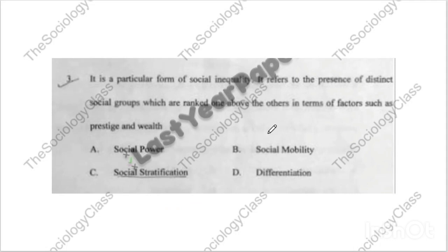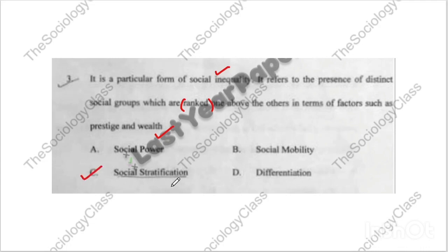Question number three: 'It is a particular form of social inequality referring to the presence of distinct social groups ranked one above others in terms of prestige, wealth, and social power.' The options are social mobility, social stratification, or differentiation. The correct answer is C — social stratification. Always remember: social inequality, rank, prestige, and wealth are all keywords for social stratification.